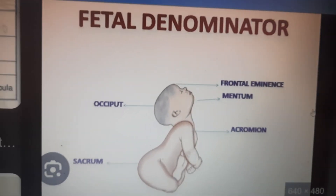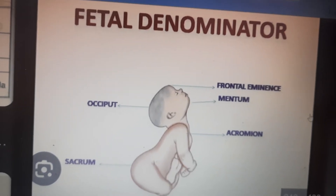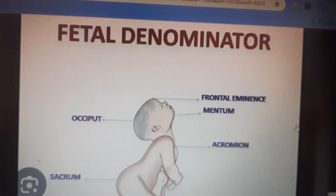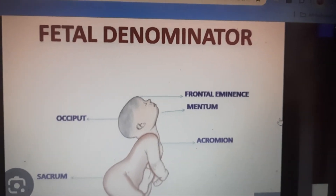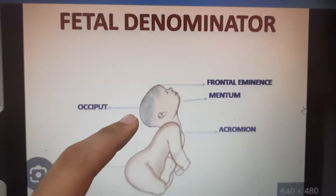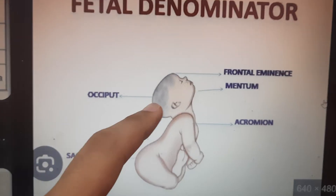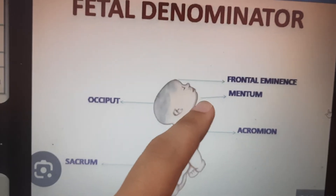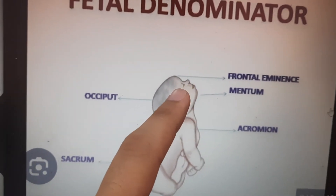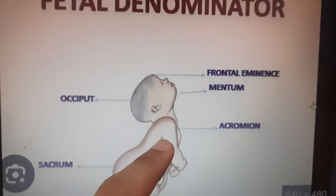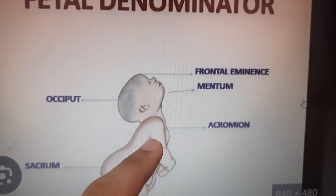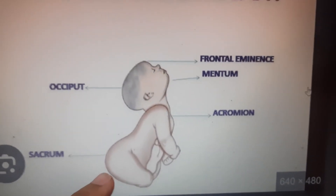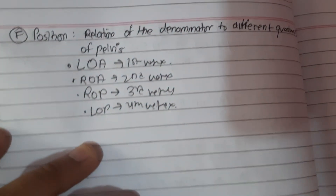The 'fetal denominator' is an arbitrary bony fixed point on the presenting part which comes in relation with the various quadrants of the maternal pelvis. The denominators are: occiput in vertex presentation, chin (mentum) in face presentation, frontal eminence in brow presentation, acromion in shoulder presentation, and sacrum in breech presentation.